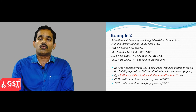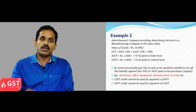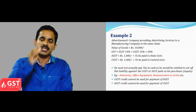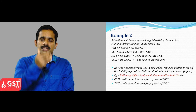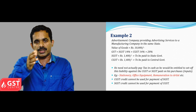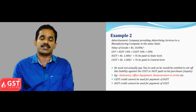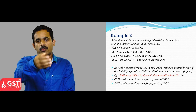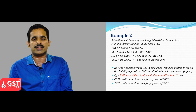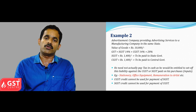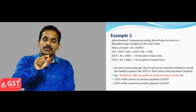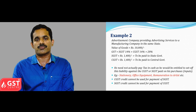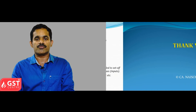One important point to remember: one can avail input tax credit by setting it off against his GST liability. In this case, the advertisement company has purchased stationery, office equipment, and paid remuneration to artists — so tax paid to such suppliers at the time of buying input goods or services can be set off against the GST liability. Remember: CGST credit cannot be set off against SGST liability, and SGST credit cannot be set off against CGST liability.